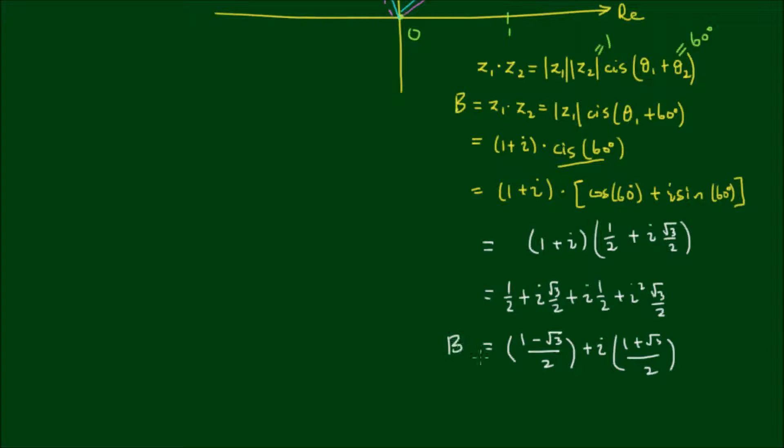And of course this is equal to B. So the coordinates of B I can express as 1 minus root 3 all over 2, comma 1 plus root 3 all over 2.